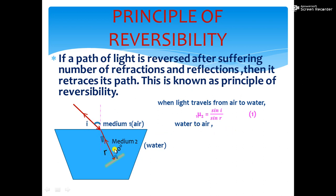And in the second case, it is going back from water to air. In this case, the refractive index of medium 1 with respect to medium 2. Here, the incident ray is this. So, angle of incidence is r. So, sin r by sin i.